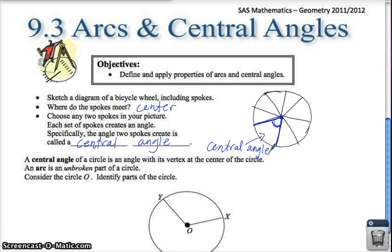So a central angle of a circle is an angle with its vertex at the center of the circle. An arc, which might be new language to you, is an unbroken part of the circle. So look at this diagram, consider circle O, identify the parts of the circle.